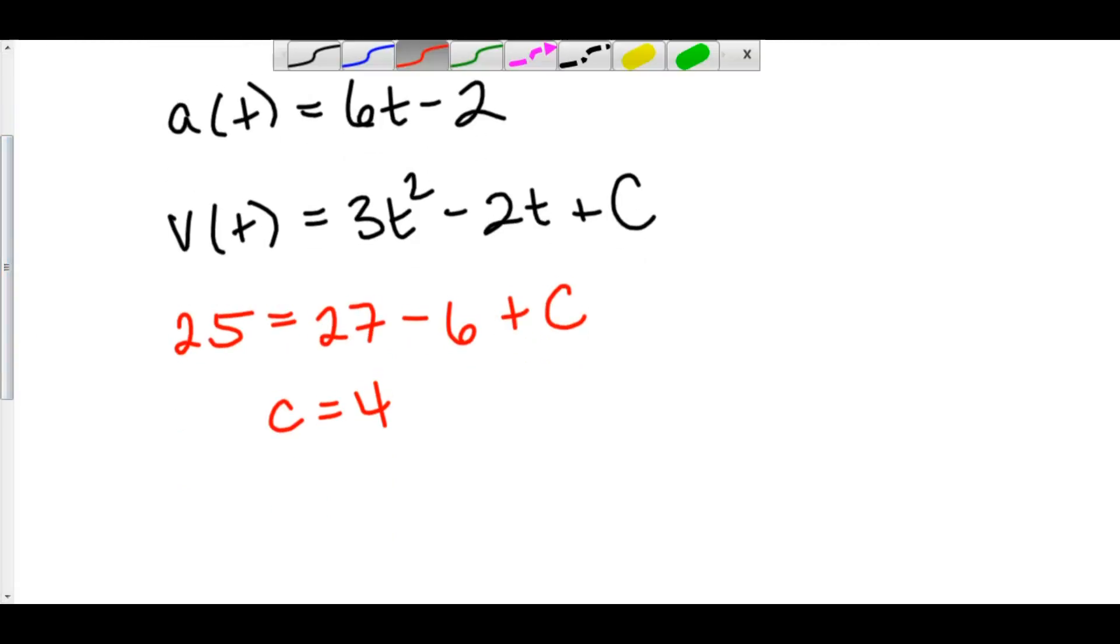Let's plug that back into our velocity function. So here we have v(t) is equal to three t squared minus two t plus four. Well, this means that our initial velocity is four.